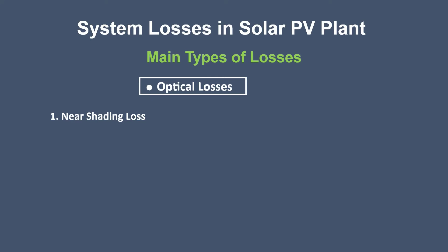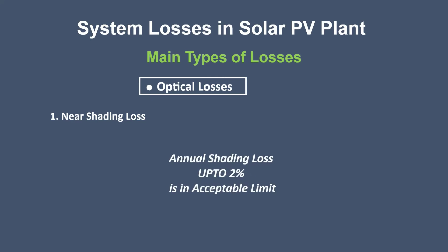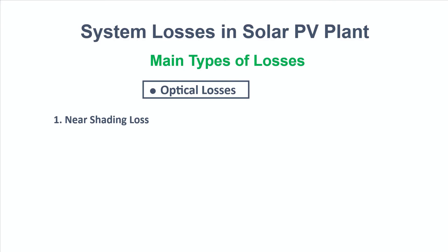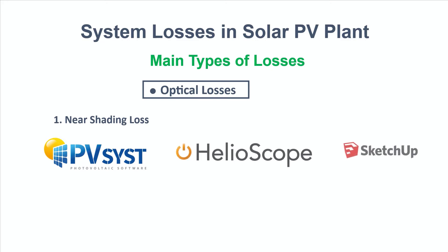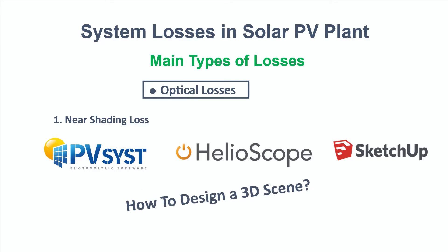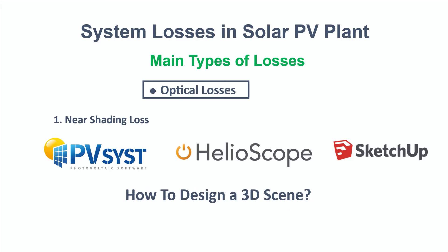Due to inter-row shadings or nearby objects, an annual shading loss of up to 2% is normally considered moderate and within acceptable limits. So while designing your PV system in software like PV Syst, Helioscope, or SketchUp, you should make sure of the exact amount of shadow loss by creating the 3D shading scene. Want to know how to design a 3D shading scene? Follow the link in the description or click on the 'i' button above.